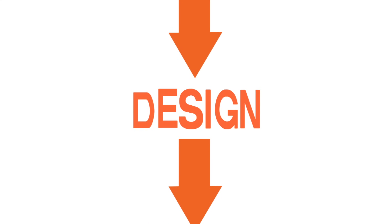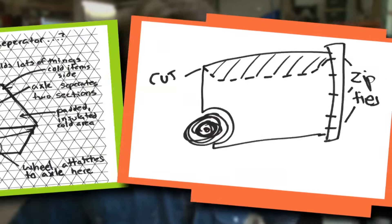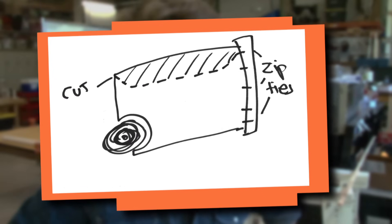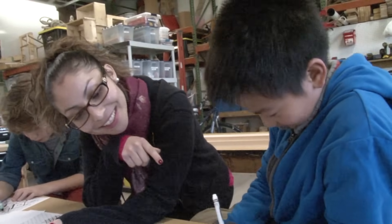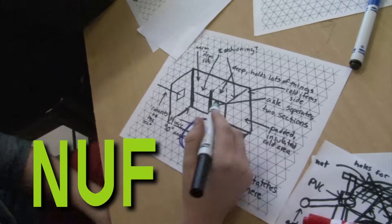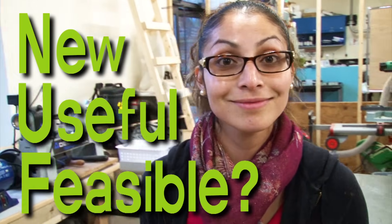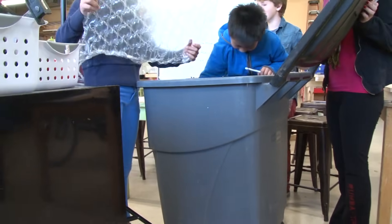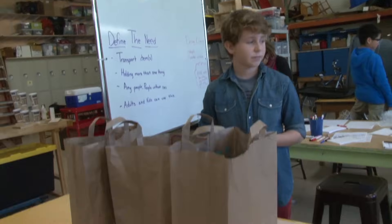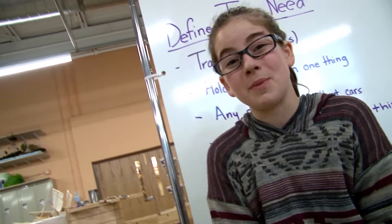The next step is to design. Looks like we have two ideas: one is a trailer made out of PVC, and two is a repurposed trash can. Designing involves sketching out your ideas, narrowing down your solutions, and giving it the NUFF test — is it new, useful, and feasible? It's new because I don't think anyone's ever made a trailer out of a repurposed trash can. It's useful because you can carry groceries in it. And it's feasible because we're actually building it.